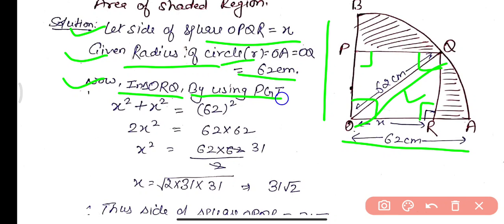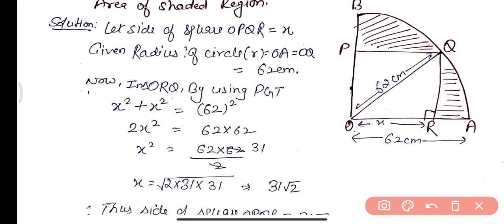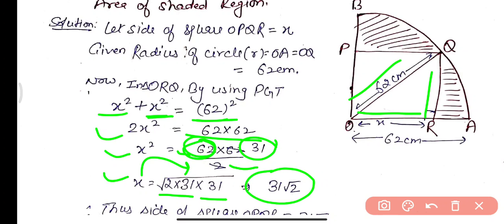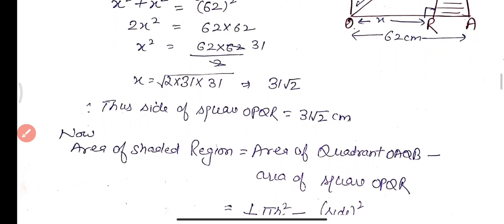Since OR = QR = x (sides of square): x² + x² = 62², so 2x² = 62 × 62, giving x² = 62 × 31. Therefore x = √(2 × 31 × 31) = 31√2 cm. The side of the square is 31√2 cm.